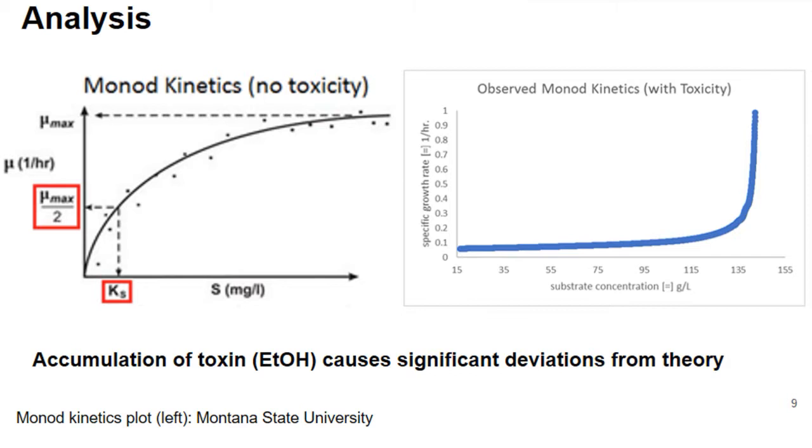The reason we see such high numbers on the far right with our observed graph is that the cells had access to as much glucose as they could possibly want, and there was very little ethanol present.